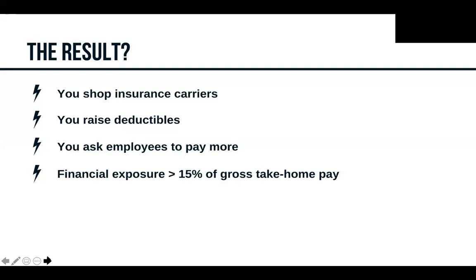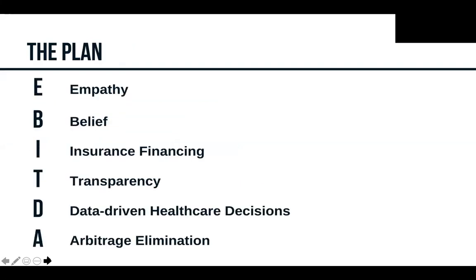Health insurance has no longer really become a benefit because of the cost and financial exposure. So how do we fix this? That's why I'm excited to have Jonathan Sacco, VP of Sales for East Coast Underwriters, on the webinar today. The plan I want to talk about is what I call EBITDA — here it's describing the value of your health plan. E is Empathy: you have to understand this health insurance situation is having a huge impact on your workforce — deductibles, out-of-pockets, and premiums are all up.